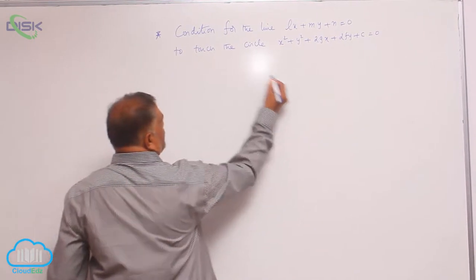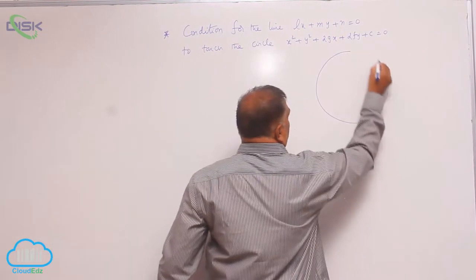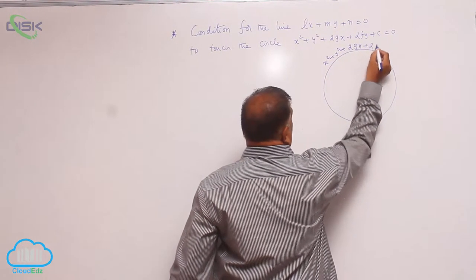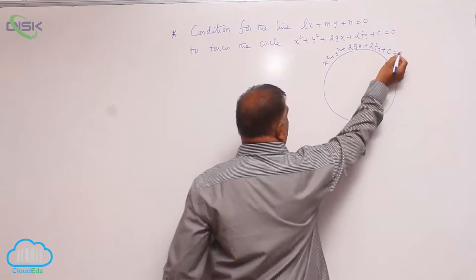Now, this is circle equation. We know this is x square plus y square plus 2 g x plus 2 f y plus c is equal to 0.